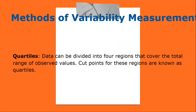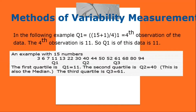Quartiles: data can be divided into four regions that cover the total range of observed values; the cut points are known as quartiles. The quartile of a dataset is the [(n+1)/4 × q]th observation, where q is the desired quartile and n is the number of observations. Q1 is the first 25% of the data; Q2 is between the 25th and 50th percentile points, with its upper bound being the median; Q3 is the 25% of data lying between the median and the 75% cut point. In the following example with 15 numbers, Q1 = (15+1)/4 = 4th observation = 11.